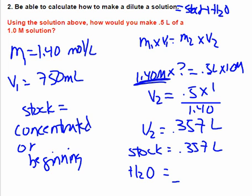Well, my total solution is supposed to be half a liter, right? So if I'm going to use 0.357 stock, and I'm going to have a half liter total, I have to add 0.143 liters of water to it to bring it up to half a liter.